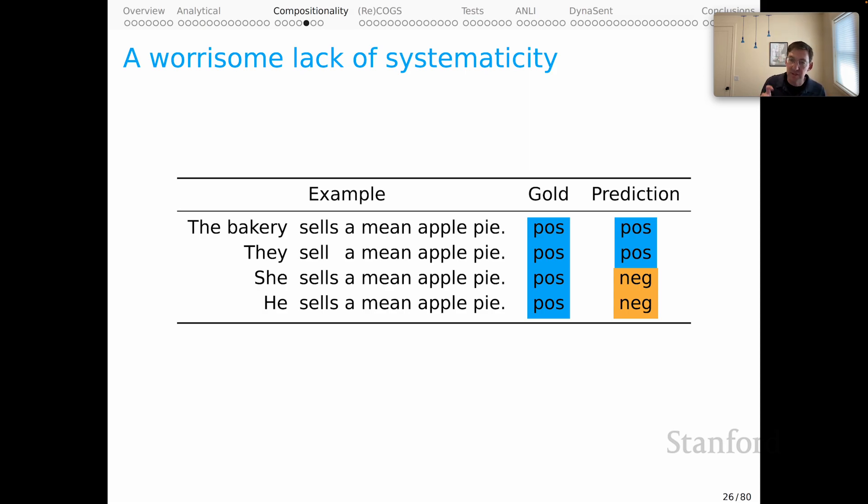whereas the gold label is of course still positive. The errors are worrisome. But the deeper thing that I was worried about is the lack of systematicity. Because as a human, I have no expectation that changing the subject from a plural pronoun to a singular one, or using a pronoun as opposed to a full noun phrase like the bakery, would have any effect on the interpretation of the adjective mean in these cases.